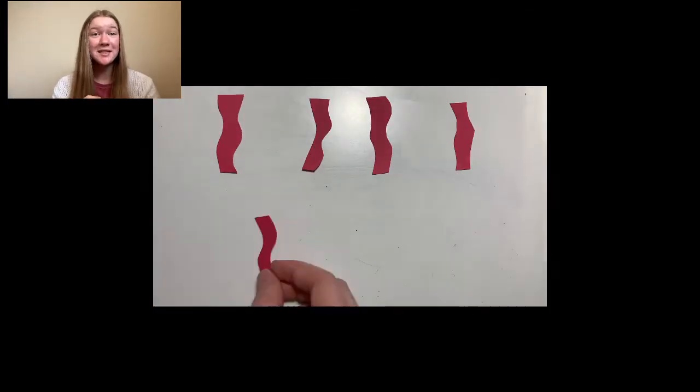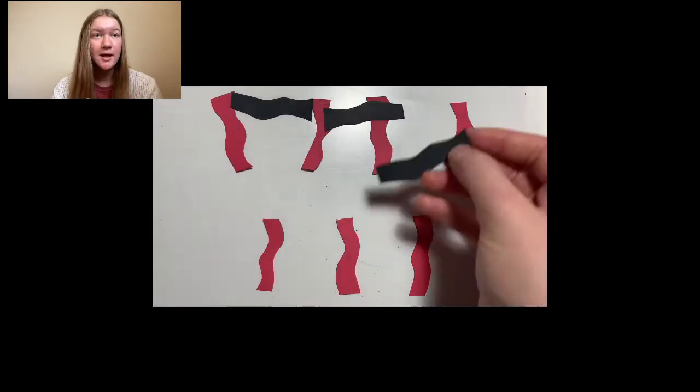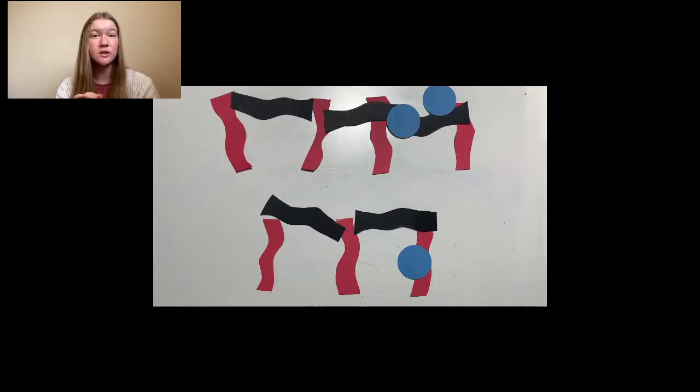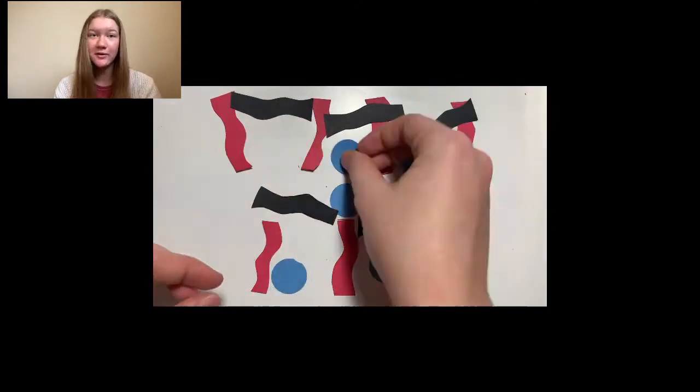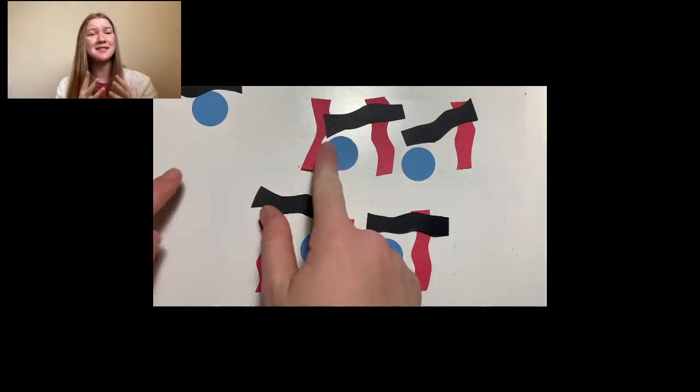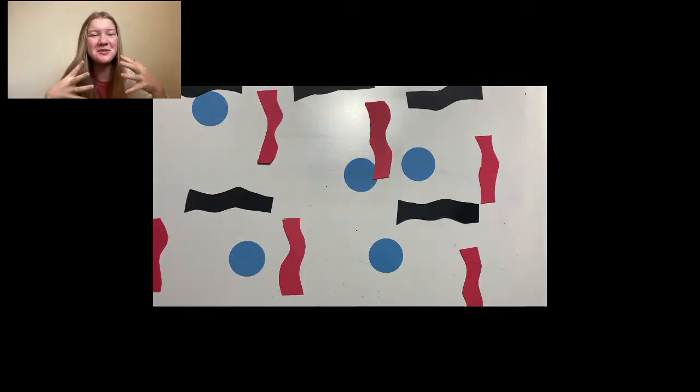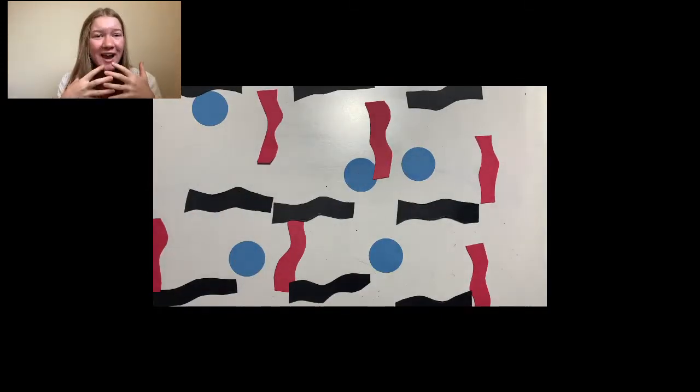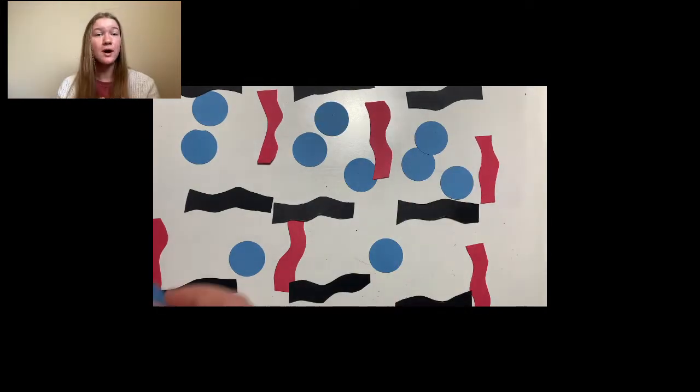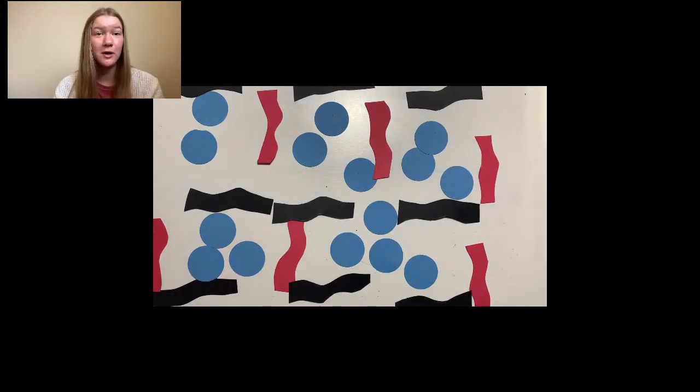So scientists can do something called cross-linking. This process forms bridges between the gaps in the polymers, shown here in black, meaning that now instead of separating in water, they will stretch apart to hold the water inside of these little gaps. The more cross-links we make, the more solid the gel will become.